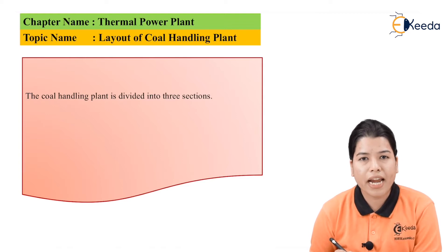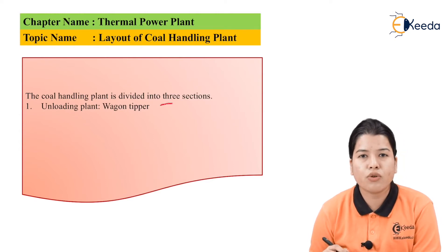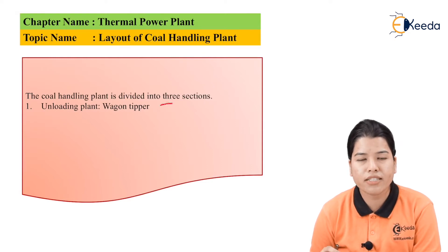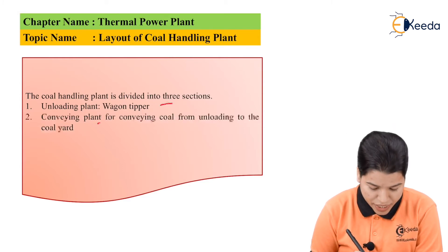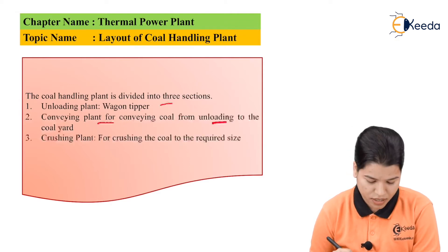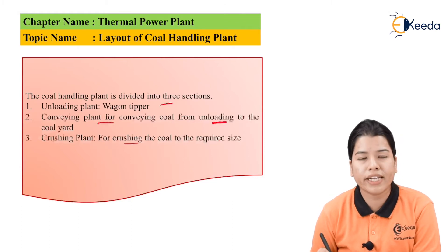The coal handling plant can be divided into three sections. First is the unloading plant, that is the wagon tripper. In the unloading plant, the coal reaches the main site from various areas or from the coal mines, and that coal needs to be unloaded. Next is the conveying plant, for conveying the coal from the unloading area to the coal yard. And third is the crushing plant, required for crushing the coal to the required size.